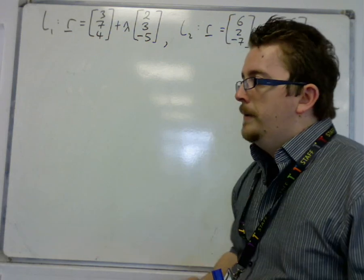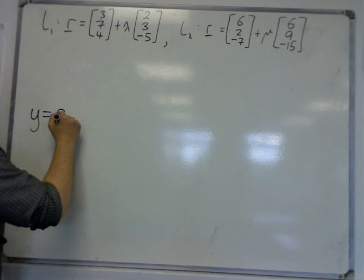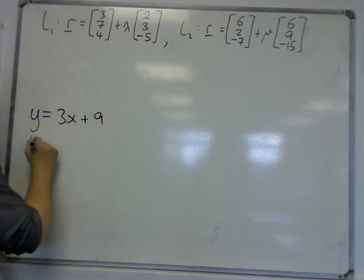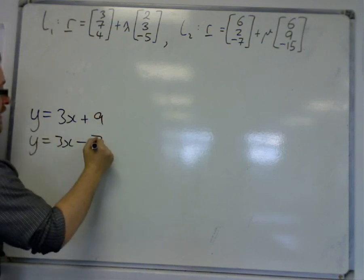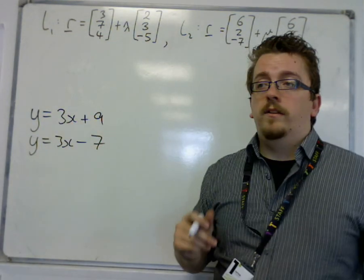Now parallel lines in two dimensions, we should remember that two lines in two dimensions will have the same gradient. So for example, y equals 3x plus 9 and y equals 3x minus 7 are parallel in two dimensions because they both have the same gradient, 3.